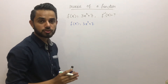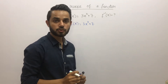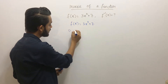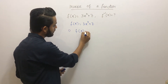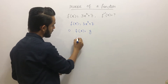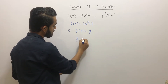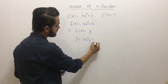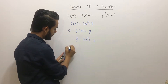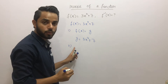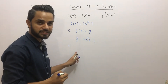Step 1: put f(x) equal to y. So we write y = 3x³ + 7. From here, step 2 will start.